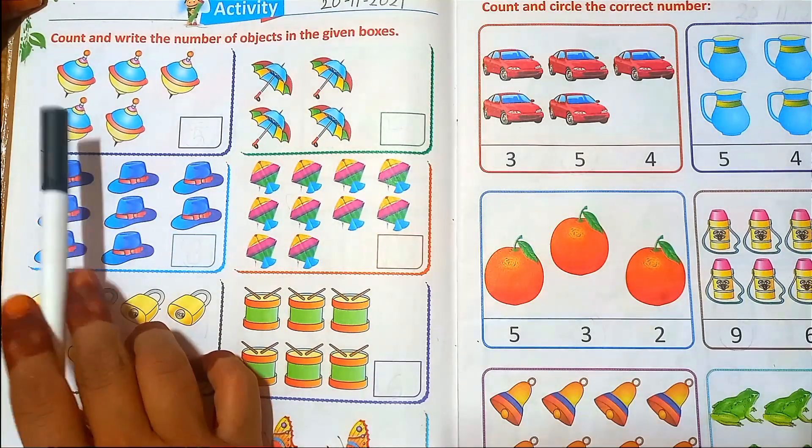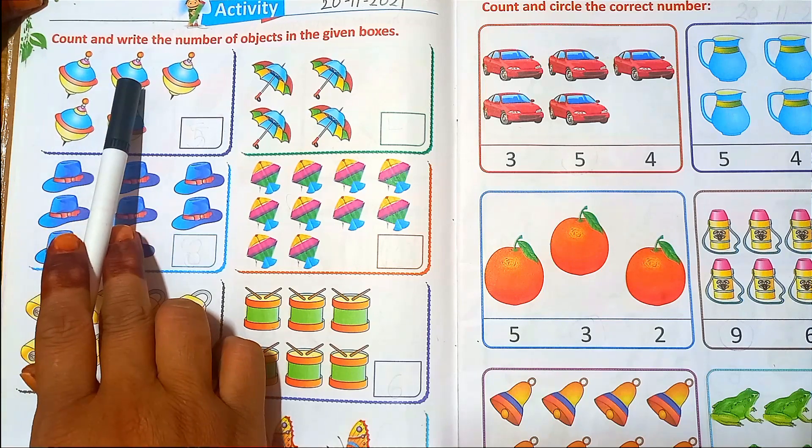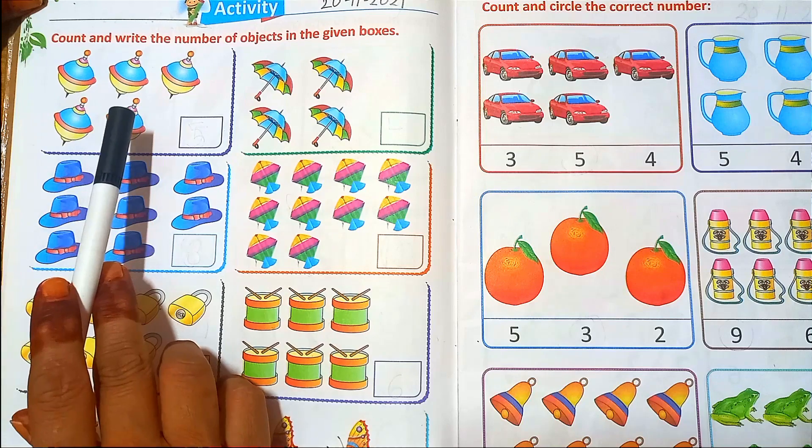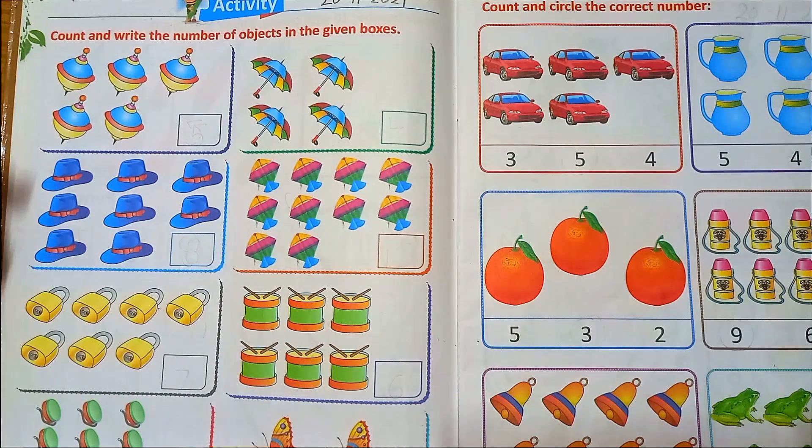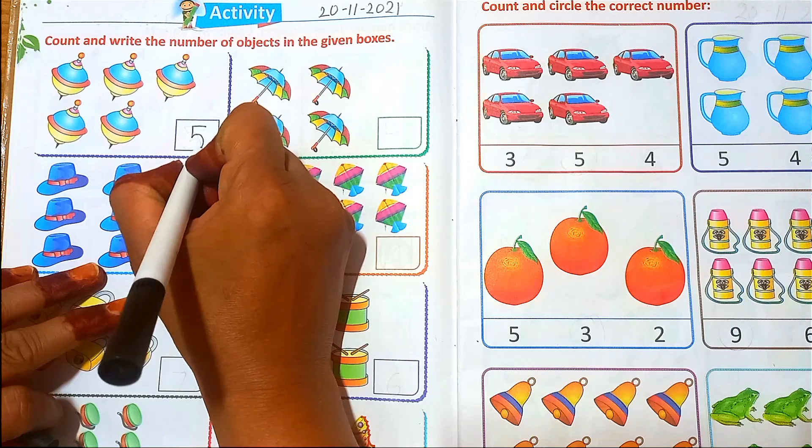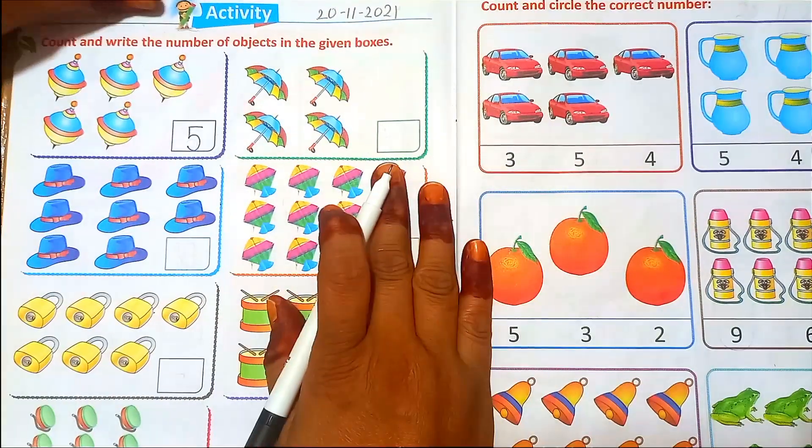Let's start from the tops. One, two, three, four, five. There are five tops. So write down number five.